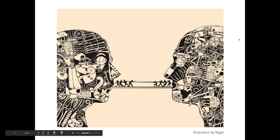The first illustration is an interesting one by Riger. If you look at it closely, you might describe it as something clearly drawn or designed by another human being. It's two faces that are looking at each other, but each face is actually composed of different cogs, wheels, and gears.